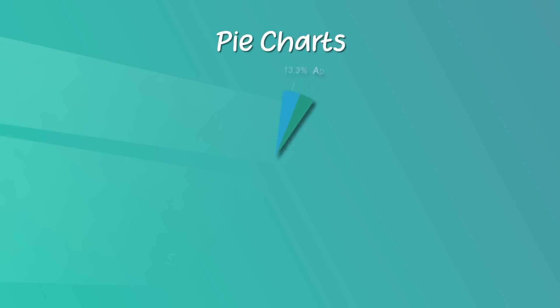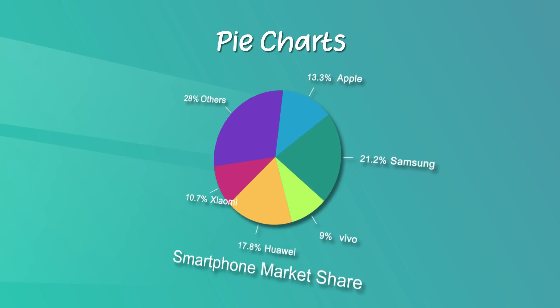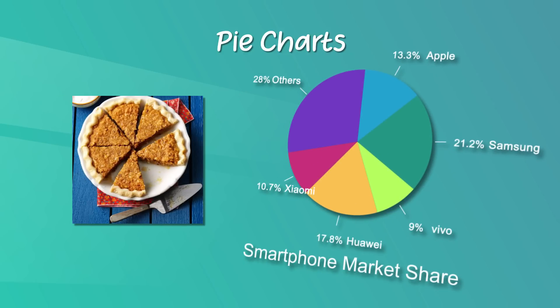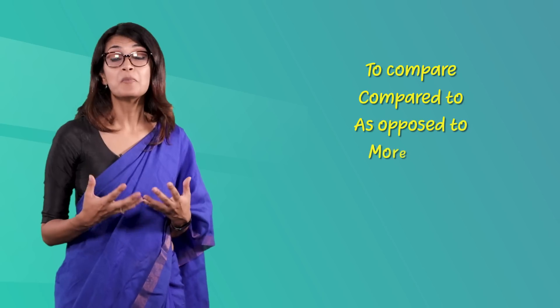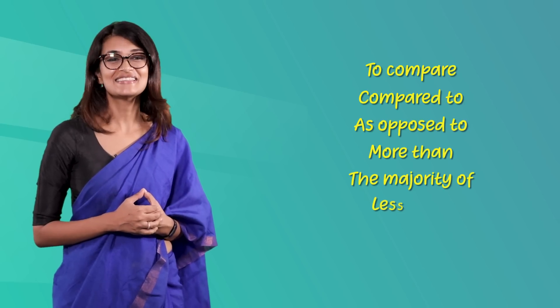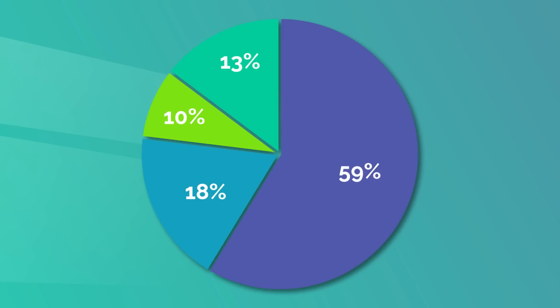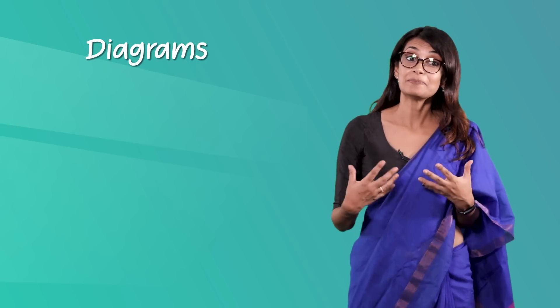Now let's look at pie charts. Pie charts are designed to visualize how a whole is divided into various parts — the chart looks like a pie, which is how it got its name. The pie chart is used to illustrate how different parts come together to make a whole. When describing a pie chart you can use words such as: compared to, as opposed to, more than, the majority of, less than, and greater than.